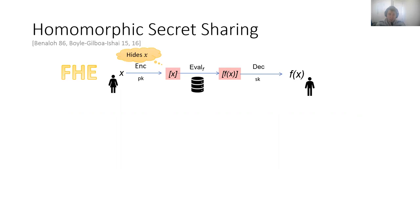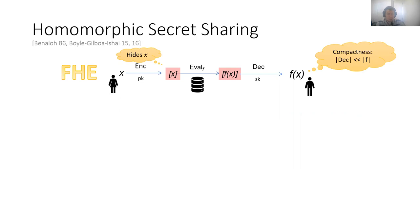Bob can decrypt it using the secret key. For this scenario, we want the ciphertext to hide Alice's input from the server. And also, for the problem to be non-trivial, we want some sort of compactness in the sense that the decryption function should be much simpler than the function description. Otherwise the server could just send the encryption of X to Bob together with a description of F.